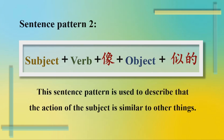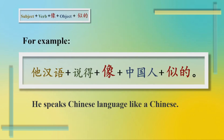Sentence pattern 2: Subject plus verb plus 像 plus object plus 是的. This sentence pattern is used to describe that the action of a subject is similar to other things. For example: 它汉语说的像中国人似的。